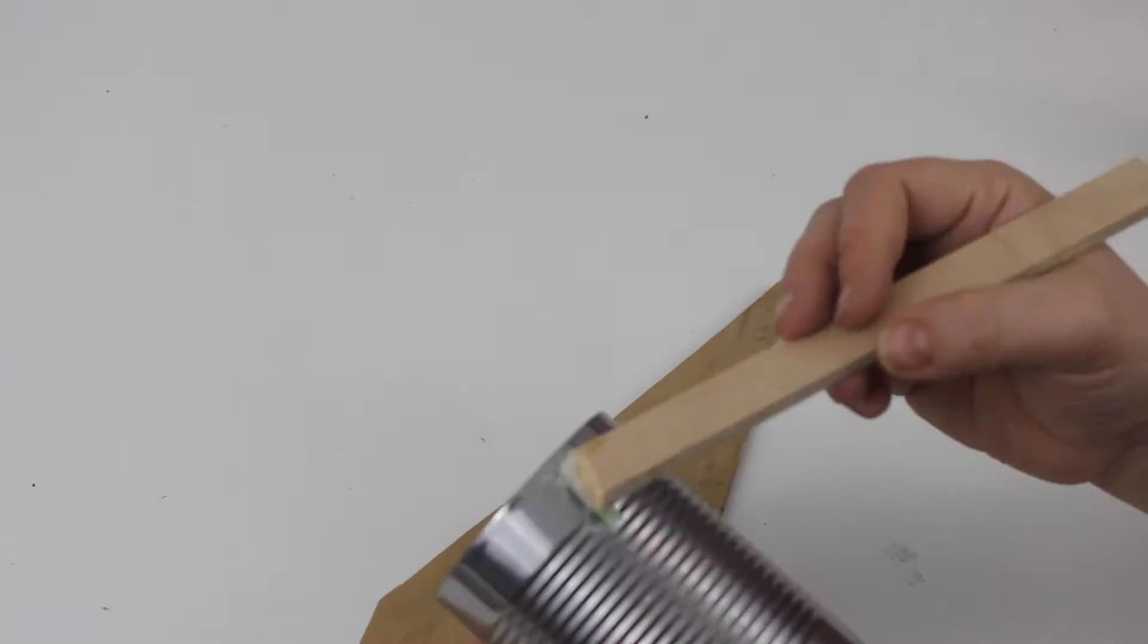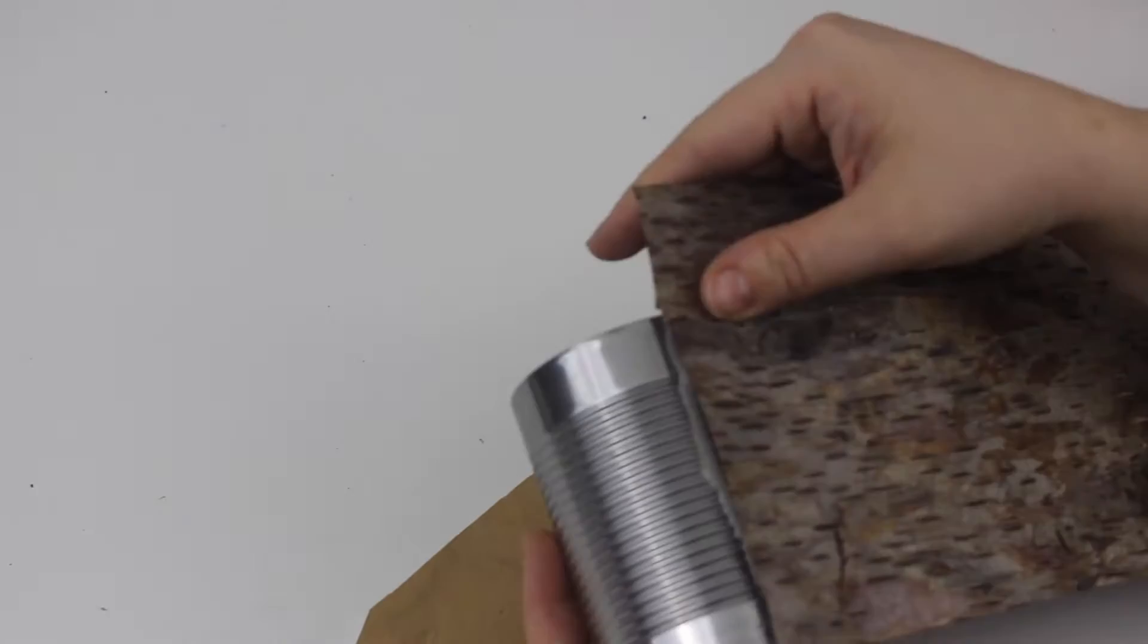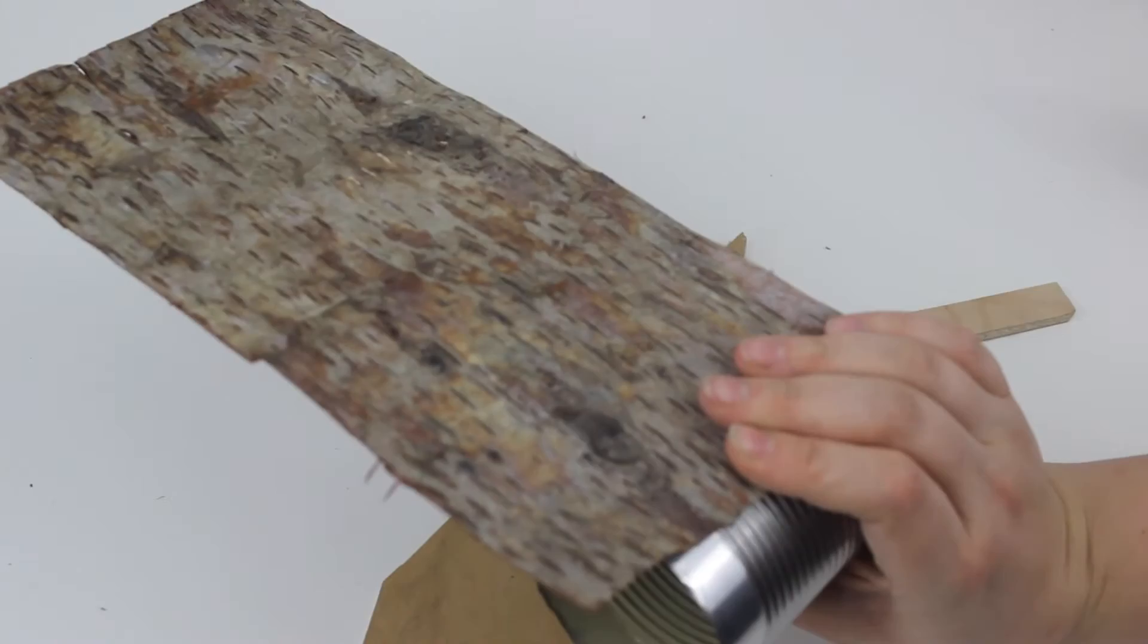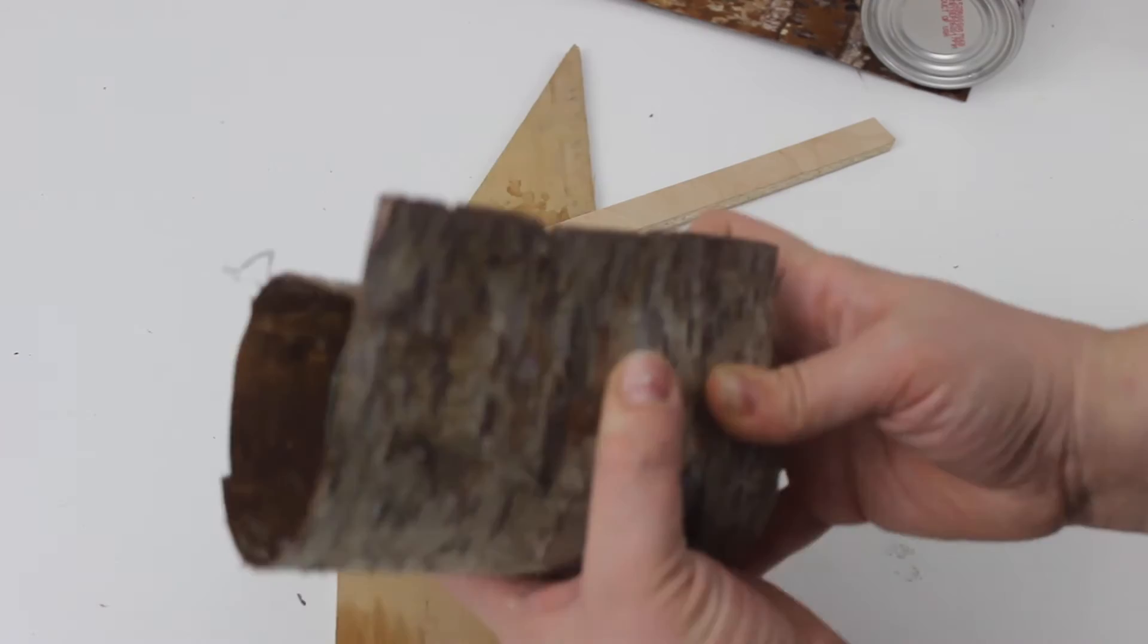When it's nicely mixed, put a line of the epoxy glue down the side of your vase or can. When ready, you can put one side of the birch bark down and hold it in place until the glue sets.